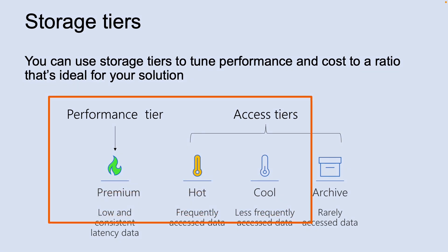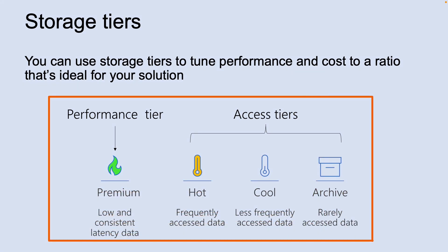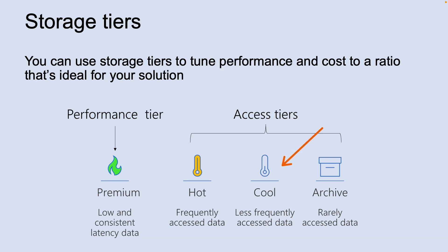These different storage tiers have some other considerations you have to take care of. The archive storage tier is only available at the Blob level and not at the storage account level. Data in the cool storage tier can tolerate slightly lower availability, but it still requires high durability and similar time-to-access and throughput characteristics as hot data.